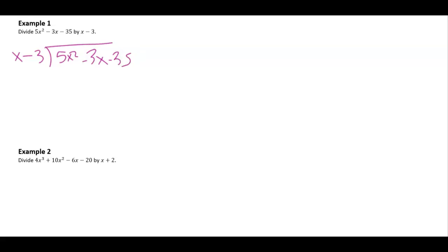But instead with synthetic division, we don't really worry so much about all of the variable pieces. We just look at the numerical values. The number that we're going to use is when your divisor is equal to 0. We're going to call that a c value, if you will, or x equals.